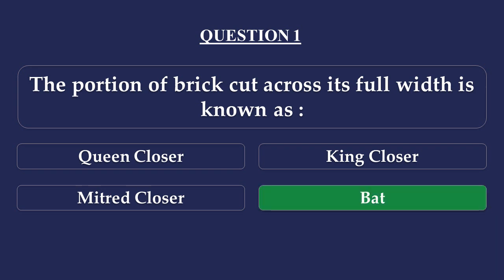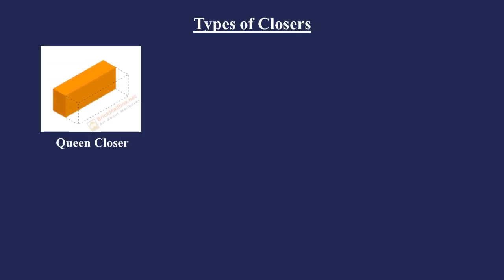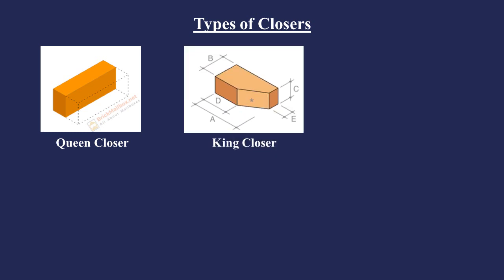We have some types of closers. First, Queen closer — the brick is cut lengthwise. The width is half, the length remains the same.